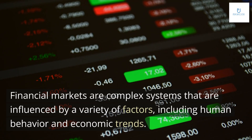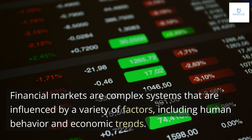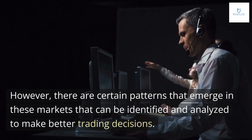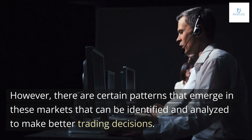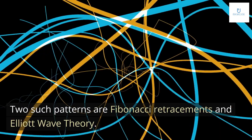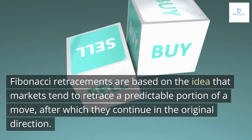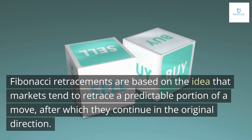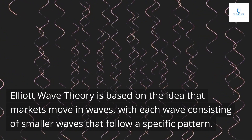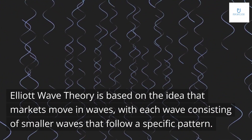Financial markets are complex systems that are influenced by a variety of factors, including human behavior and economic trends. However, there are certain patterns that emerge in these markets that can be identified and analyzed to make better trading decisions. Two such patterns are Fibonacci retracements and Elliott wave theory. Fibonacci retracements are based on the idea that markets tend to retrace a predictable portion of a move, after which they continue in the original direction. Elliott wave theory is based on the idea that markets move in waves, with each wave consisting of smaller waves that follow a specific pattern.